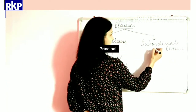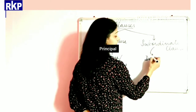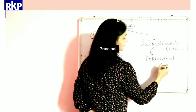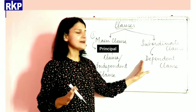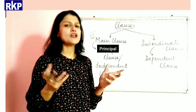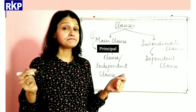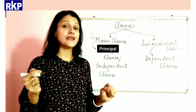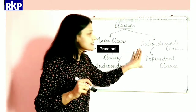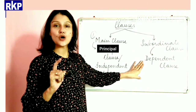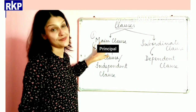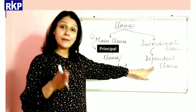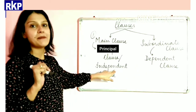The subordinate clause is also known as dependent clause. If its name is 'dependent', that means it is dependent on something — and that something is the main clause. That is why it is called dependent clause, and the main clause is called independent clause.